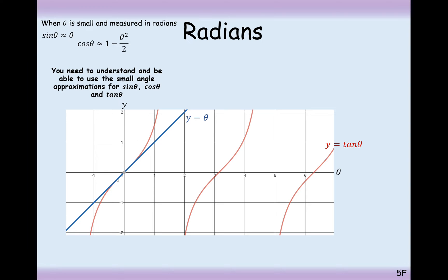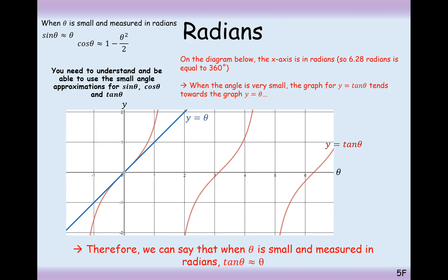And for tan, tan is the same as sine. Y equals theta is our approximation there. In this case here, tan is going to be approximated to theta when theta is measured in radians.